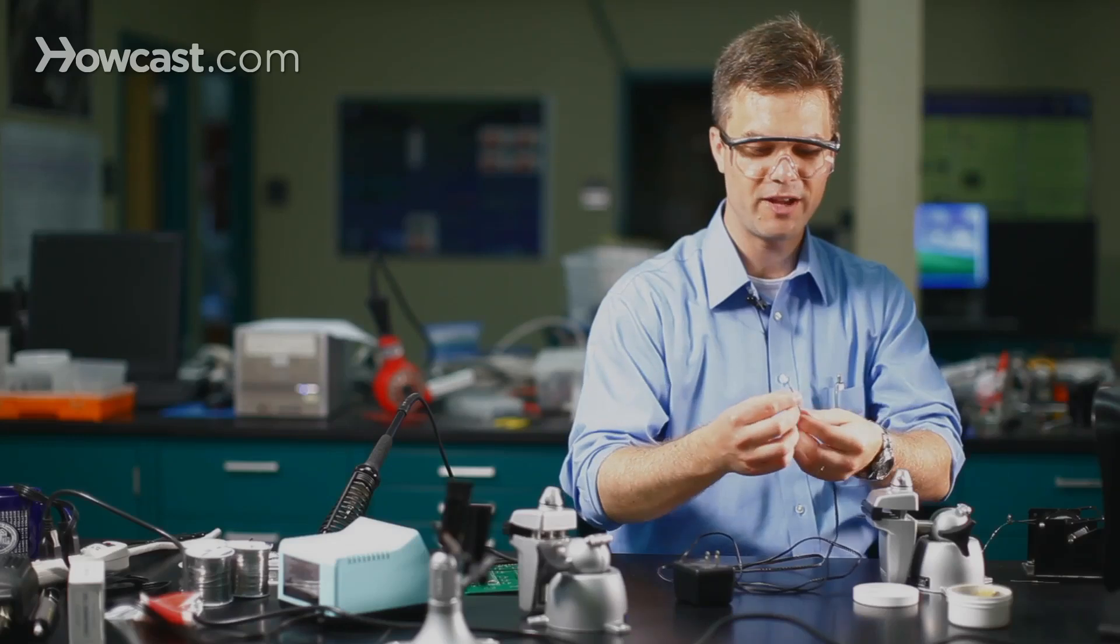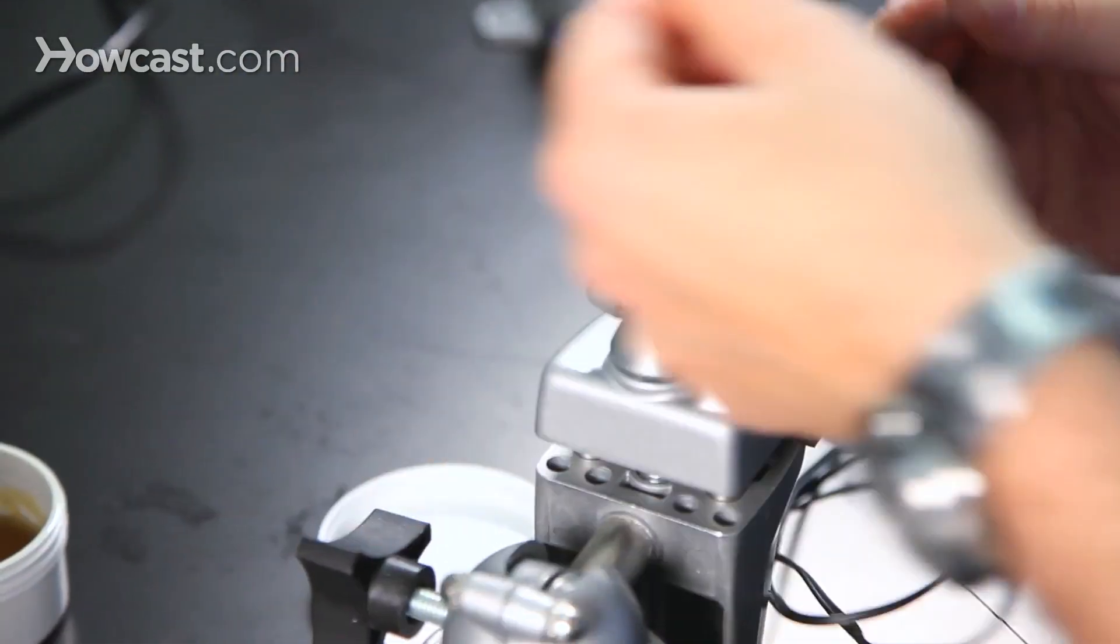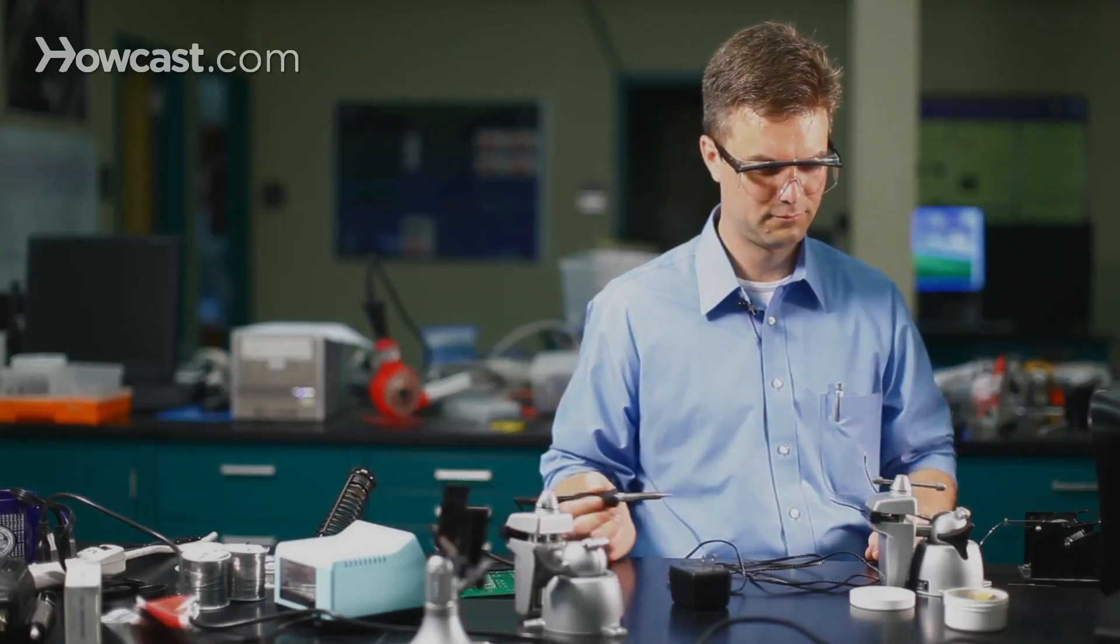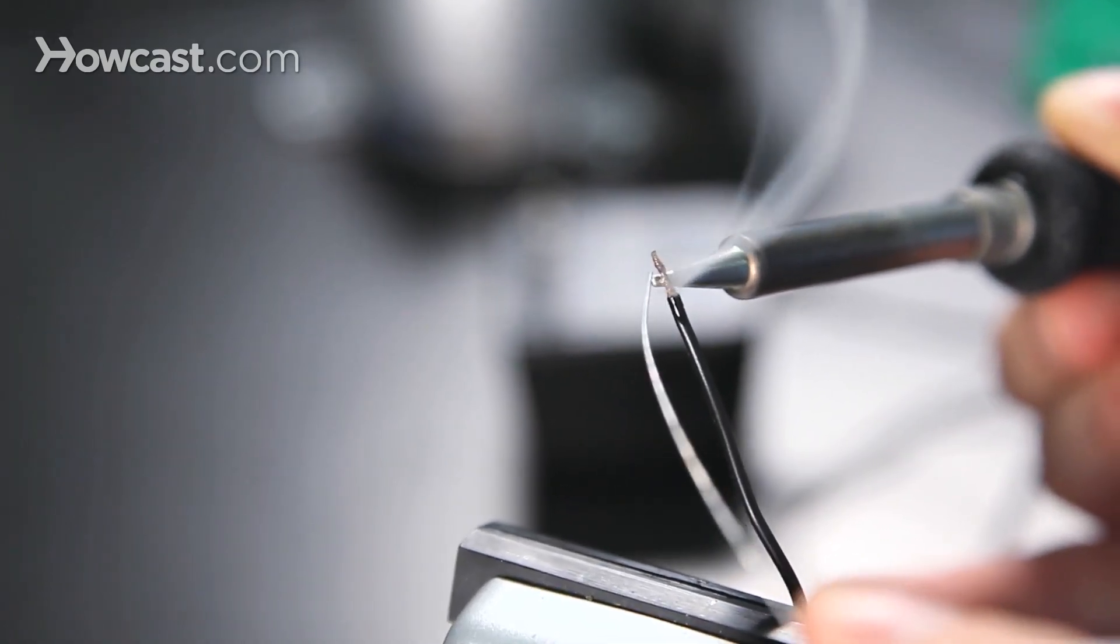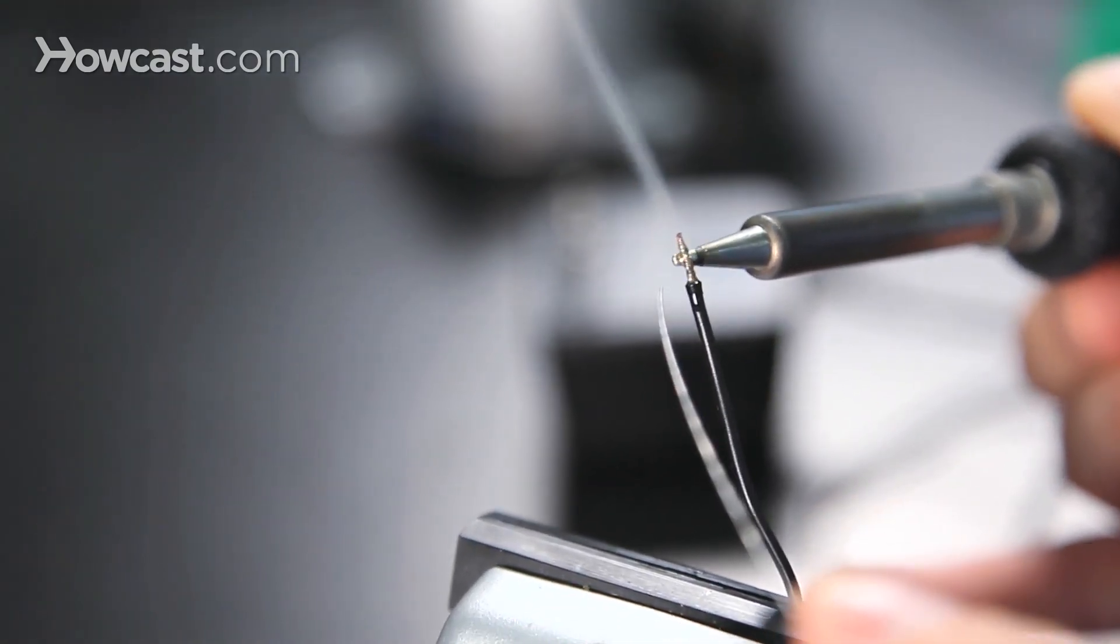Now, if we try to do the same process with the oxidized copper, we're going to run into trouble. Add our flux. Here we go. As we heat the joint, see that our solder still tries to find its way in there.